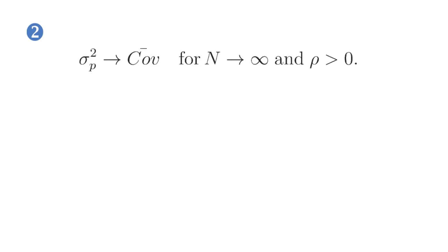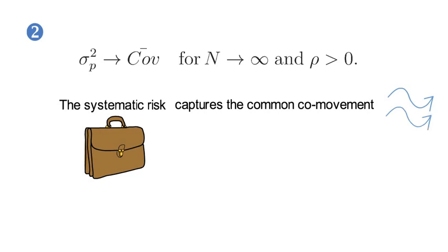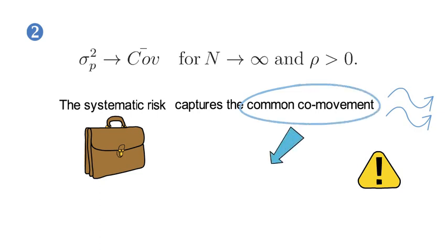Now the second takeaway. In the more relevant environment of positive asset correlations, portfolio risk converges to the average covariance term. This says that systematic risk of a large portfolio captures the common co-movement among all the constituents of that portfolio. The reason for the common co-movement is that different firms and investment opportunities have common exposure to a small set of economy-wide macroeconomic risk factors.